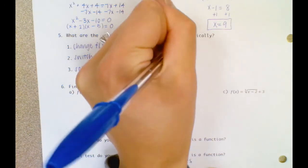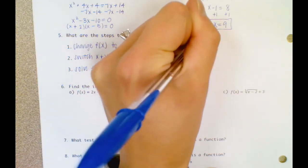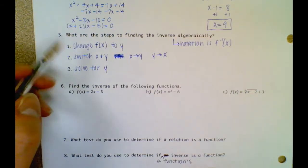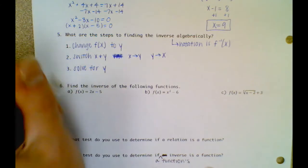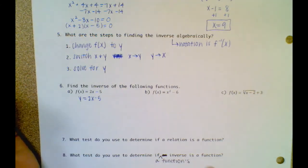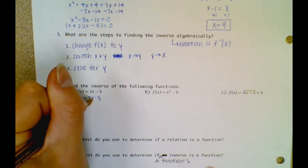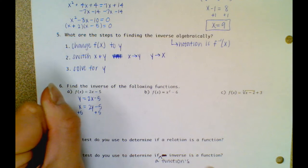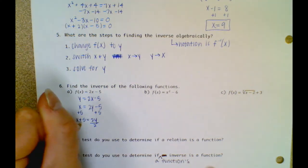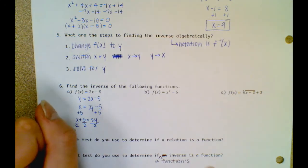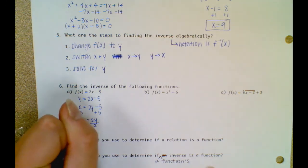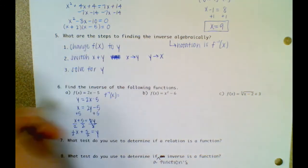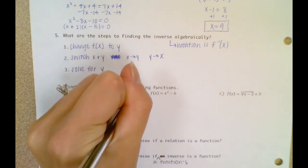Remember, the inverse notation is f to the negative first of x, and because we're good mathematicians, let's use that notation. Number 6 is to find the inverse of the following function. Step 1: f of x becomes y. Step 2: switch x and y, so that y becomes x and this x becomes a y. Now solve for y: add 5, so x plus 5 equals 2y. Divide everything by 2. I get one-half x plus 5 over 2 equals y, so the inverse of f of x is one-half x plus 5 over 2.